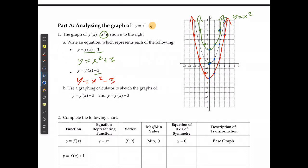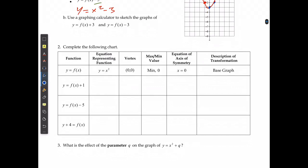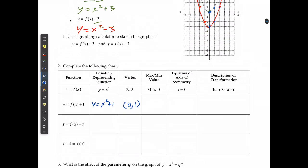The only thing that happened is the graph moved up 3 units or down 3 units for every single point. So if I say y equals f of x plus 1, my equation is y equals x squared plus 1. The vertex moves up to 0 and 1, the shape doesn't change, but the minimum is now 1. The axis of symmetry stays the same. This is called a translation — it was translated one unit up.